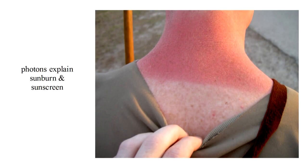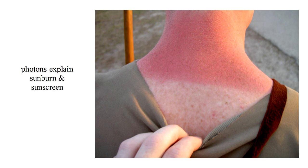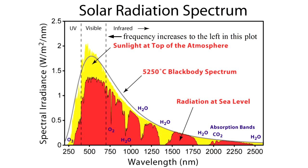A more prosaic example is how photons explain sunburn and sunscreen. If you look at the spectrum of solar radiation, you find that the great majority of the energy is in the visible and infrared regions. Only a tiny fraction is in the high frequency short wavelength ultraviolet region.